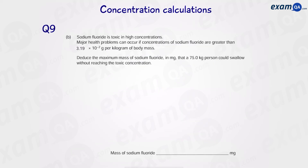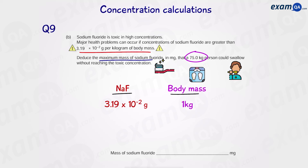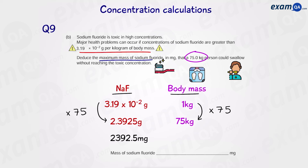Part b: if the mass of sodium fluoride exceeds the toxic limit per kilogram of body mass, it becomes dangerous. How much sodium fluoride can a person who weighs 75 kilograms swallow without being intoxicated? The maximum mass of sodium fluoride per kilogram of body mass is given, and since the person weighs 75 kg we multiply by 75. Multiplying by 1,000 converts to milligrams, giving a maximum of 2,390 milligrams of sodium fluoride.